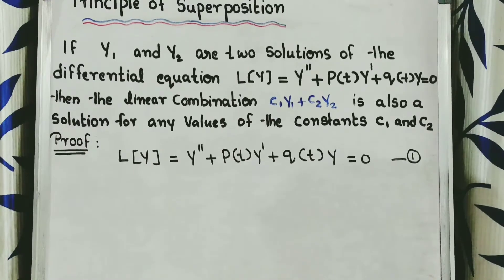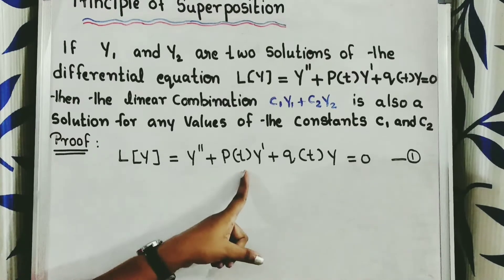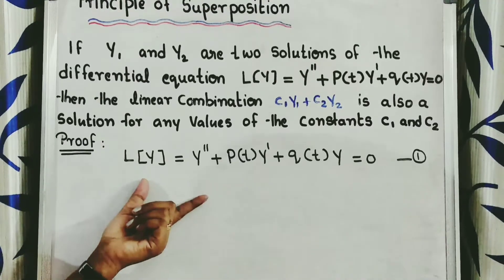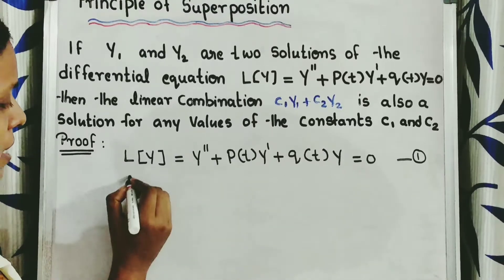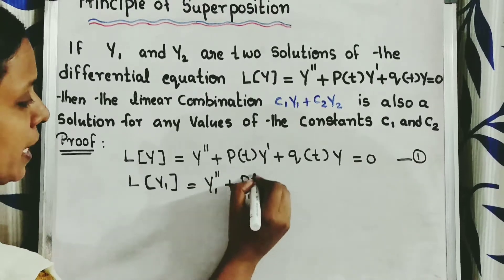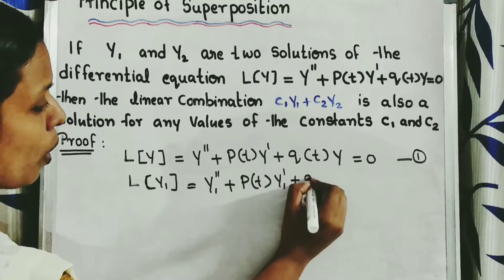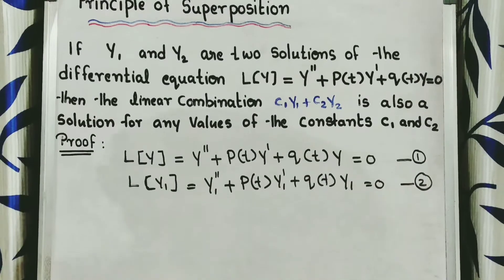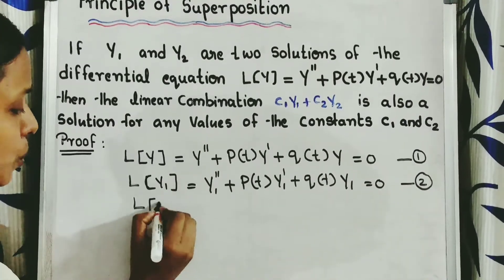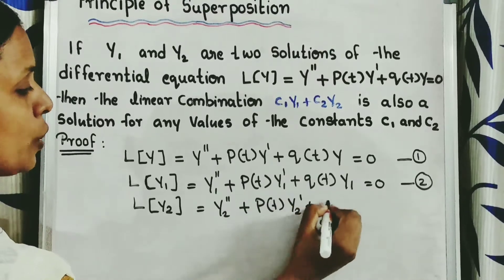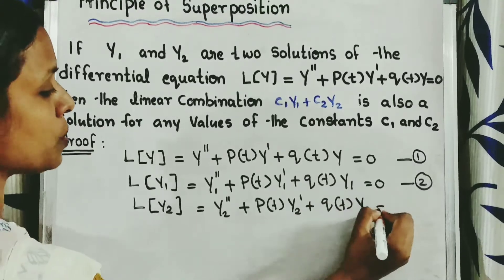We are going to prove this theorem. Consider the second order homogeneous linear differential equation: L(y) = y'' + p(t)y' + q(t)y = 0. If y₁ and y₂ are two solutions of this equation, then we can write L(y₁) = y₁'' + p(t)y₁' + q(t)y₁ = 0 (equation 2), and L(y₂) = y₂'' + p(t)y₂' + q(t)y₂ = 0 (equation 3).